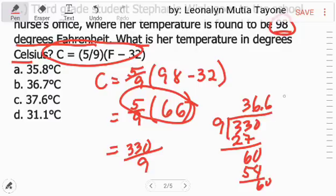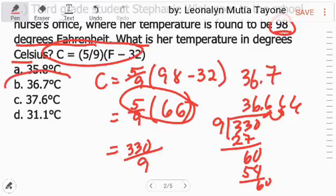So, 666 na lahat. I-round off natin into 10s kasi nasa 10s siya. So, 6 yung nasa right side niya and this is 36.7. Letter B.